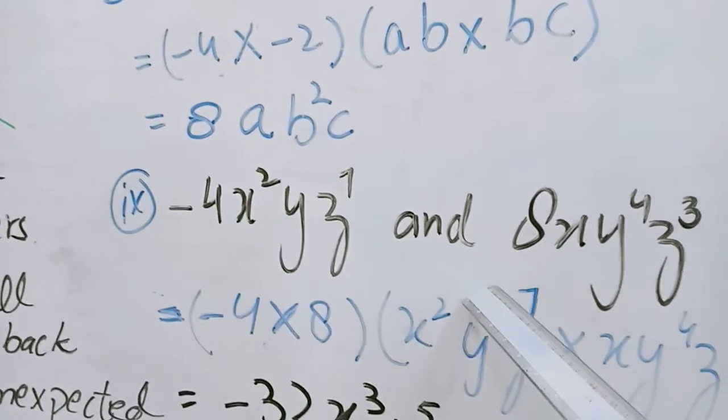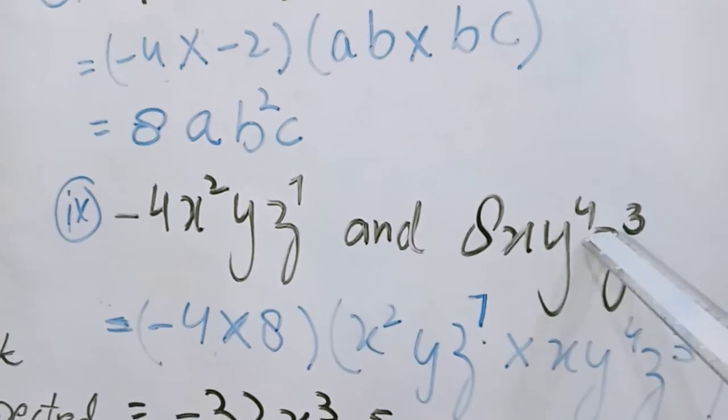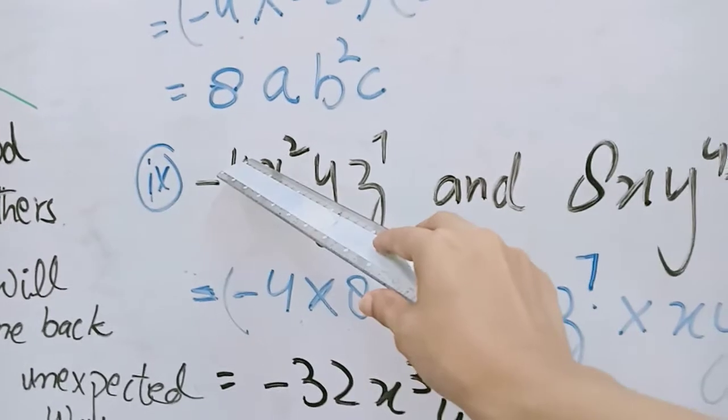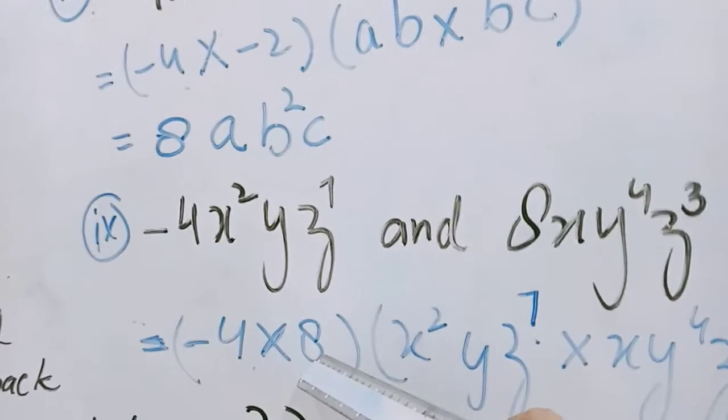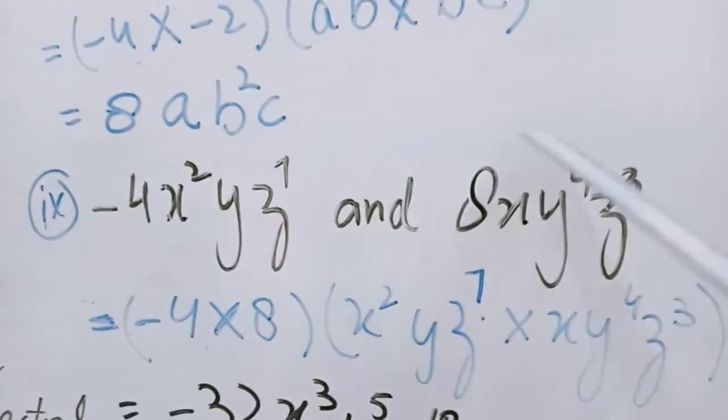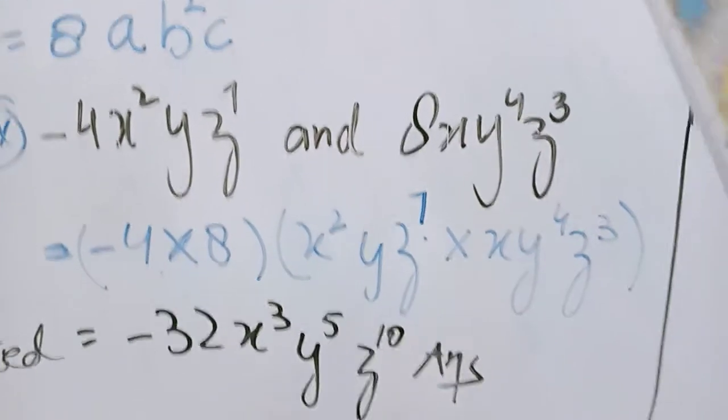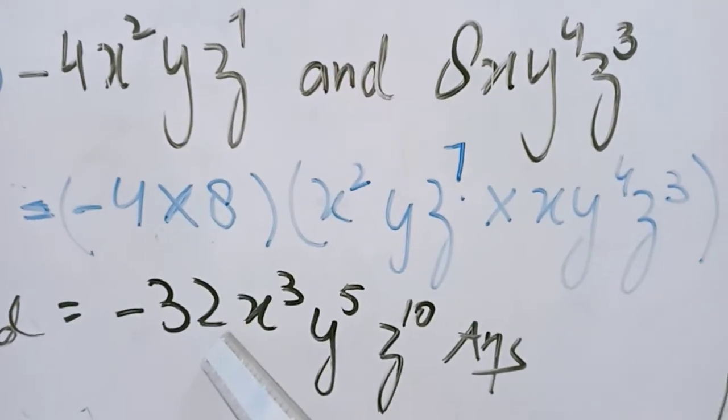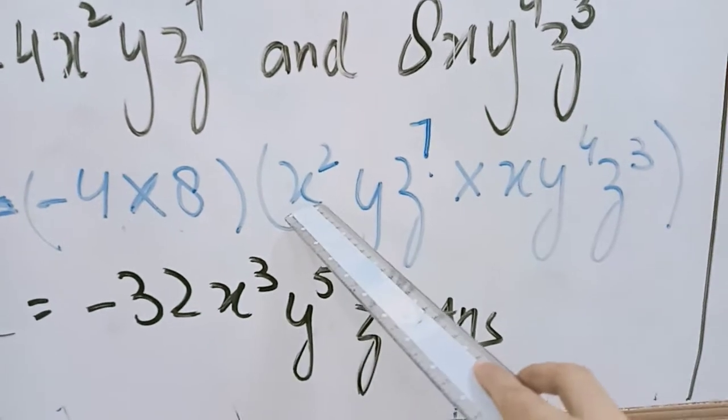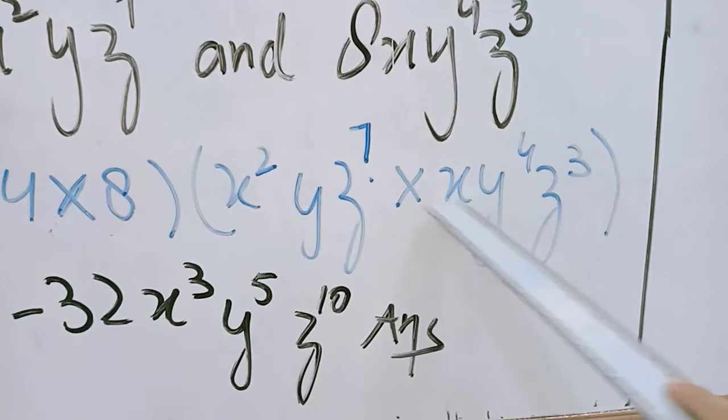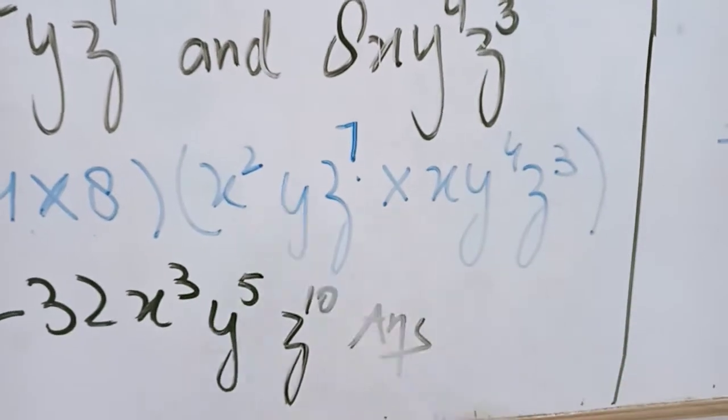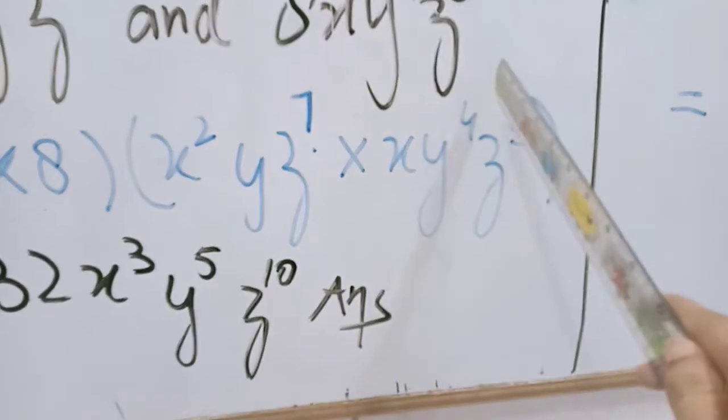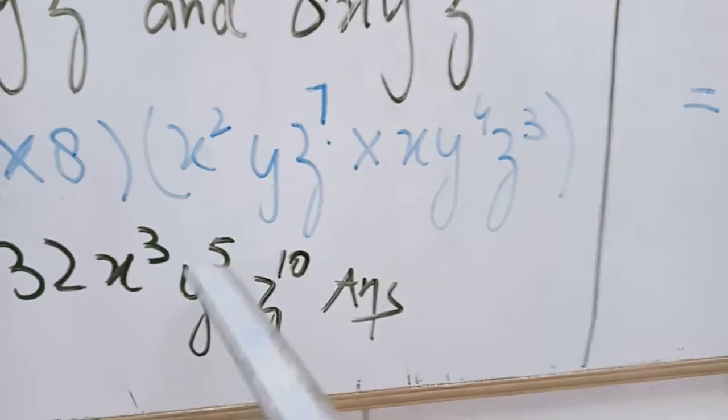And 8xy raise power 4 and z raise power 3, we multiply. Now minus 4 with 8, minus 4 multiply 8 and these variables will be multiplied. It is minus plus, minus minus, 8 for the 32. Here we have x square, here we have x, so how many x we have: 2 and 1, 3x raise power 3. Here we have y 1 and y raise power 4, 4 and 1 y is equal to 5y.